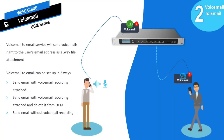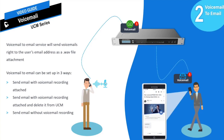The Grandstream UCM series supports voicemail to email, which allows users to listen to their voicemail messages while away from their physical phone. When an extension receives a voicemail, the UCM will instantly send an email notification with an attached WAV recording of the voicemail to the associated email address. The email includes the time and date of the message, caller ID information, destination extension information, message duration, and an attached WAV recording.